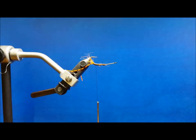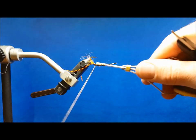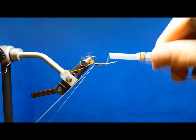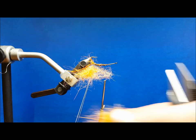When building a heavier silhouette for a pattern like this crawdad, I use a more traditional closed off dubbing loop by immediately securing the thread to the hook shank. This allows me to use the tension of the two sides of the loop to pack larger amounts of dubbing into the loop.